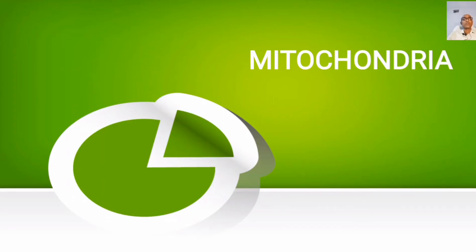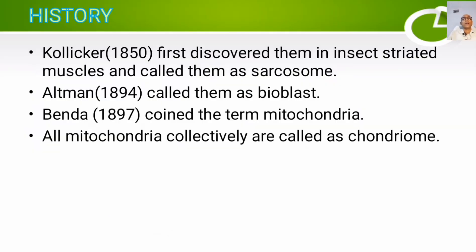Good morning. Today we are going to discuss mitochondria — its basic structure and function. Mitochondria was first discovered by Kolliker in 1850, and he called them sarcosome. Later in 1894, Altmann called them bioblasts, and the term mitochondria was first put forward by Benda in 1897. All the mitochondria in a cell are collectively known as chondriome.